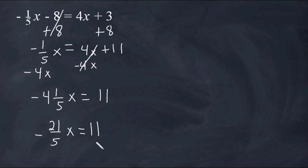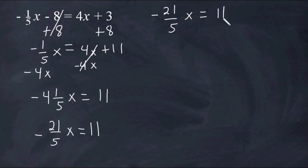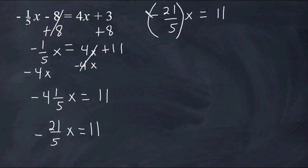I'm going to write this at the top because I ran out of space. We have to get rid of that negative 21 fifths and send it over to the right-hand side. Whenever you have a coefficient which is a fraction, what you can do to get rid of it is to multiply it by its own reciprocal. So we're going to take this improper fraction and multiply it by negative 5 over 21.